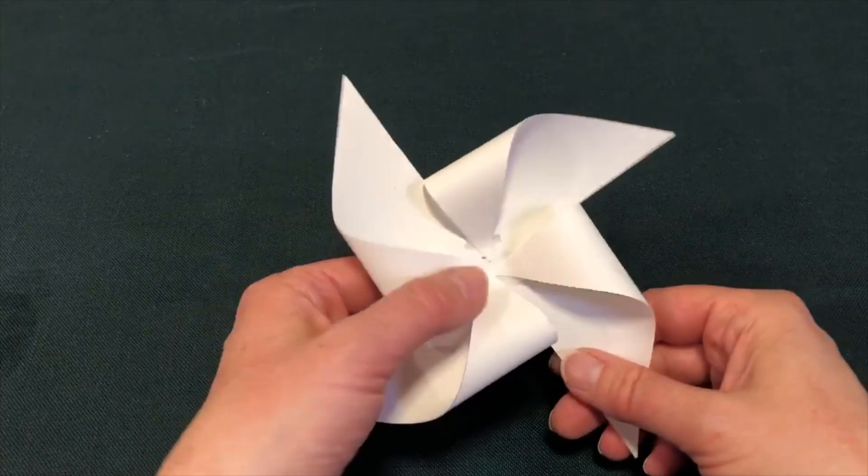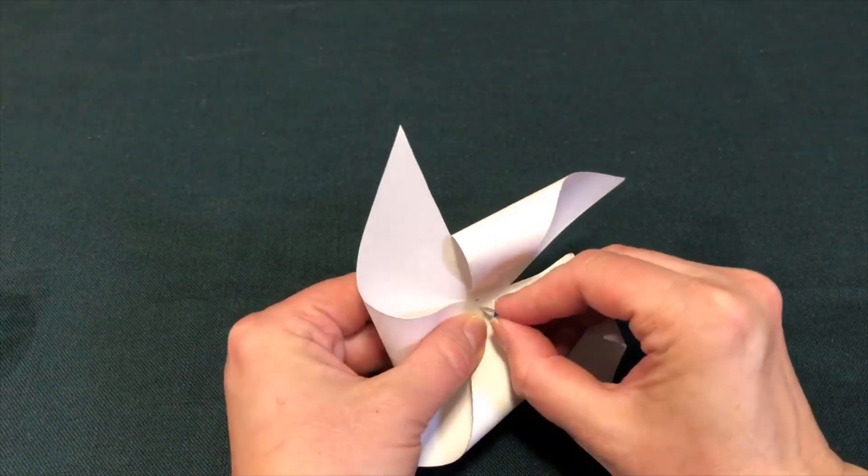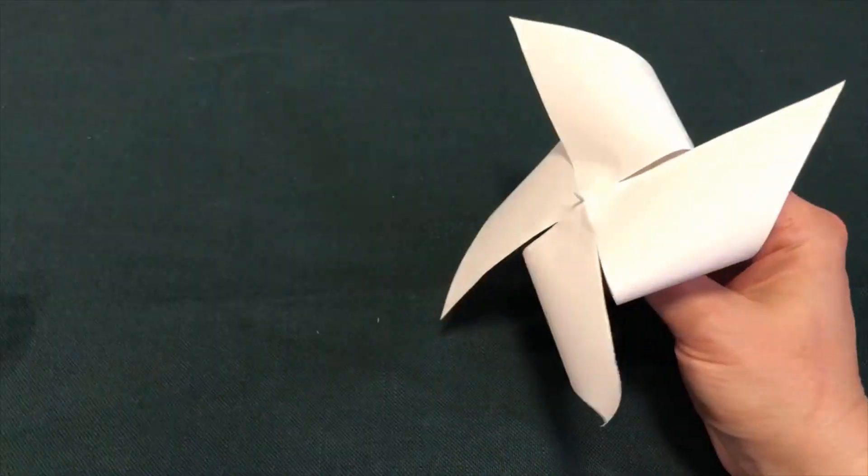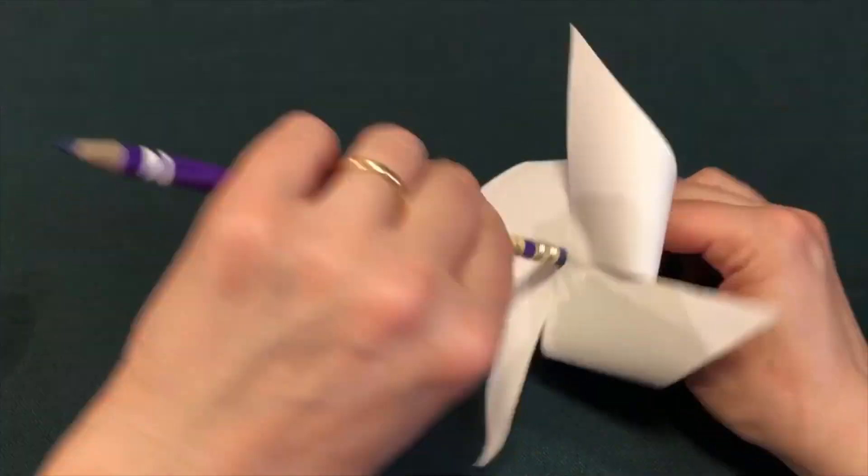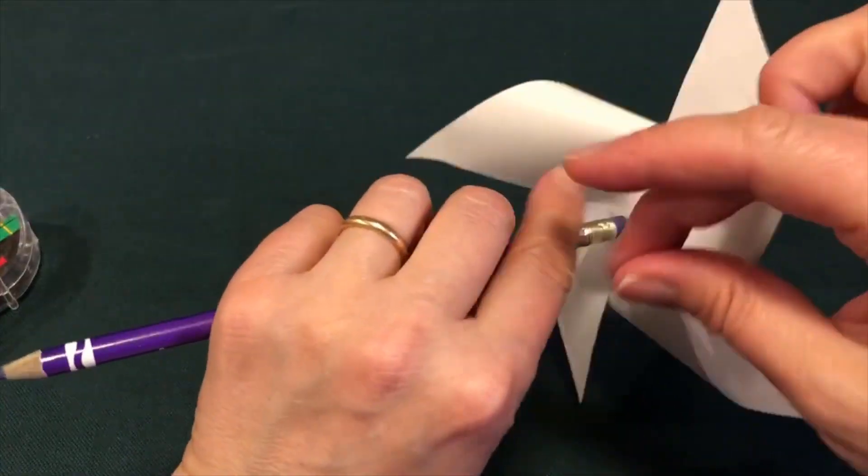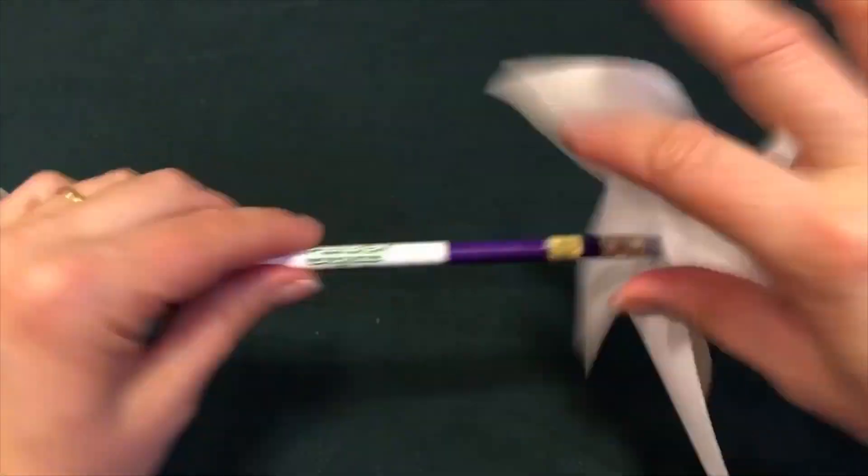Now attach the pinwheel to the top of the pencil eraser with the push pin. And you want to make sure that the pinwheel and the pencil turn together, so you might need to use a small piece of tape to attach the pinwheel to the eraser.